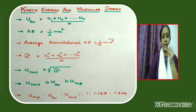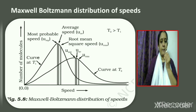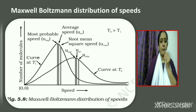It is found that root mean square speed > average speed > most probable speed. The Maxwell-Boltzmann distribution of speeds shows that the maximum in the curve represents the speed possessed by the maximum number of molecules, and this speed is known as the most probable speed.